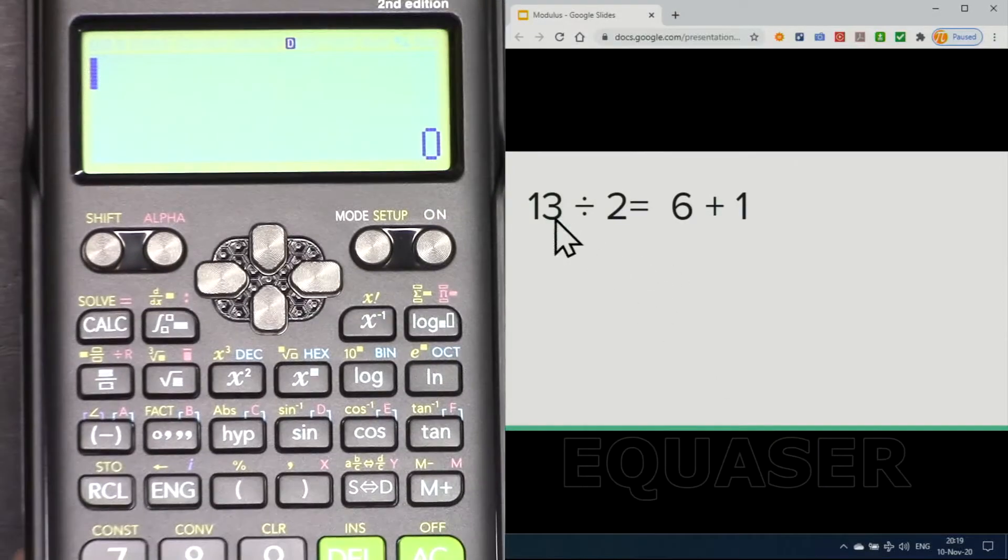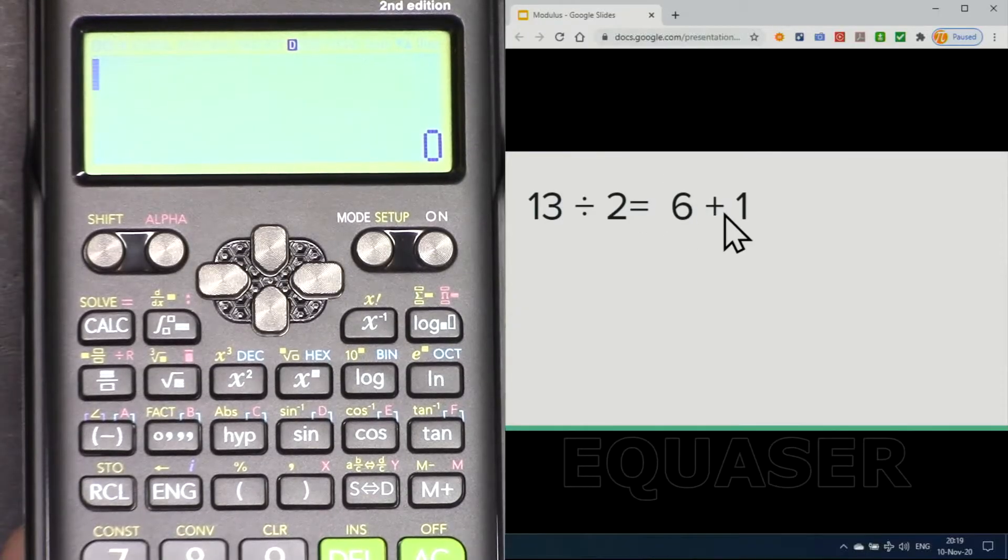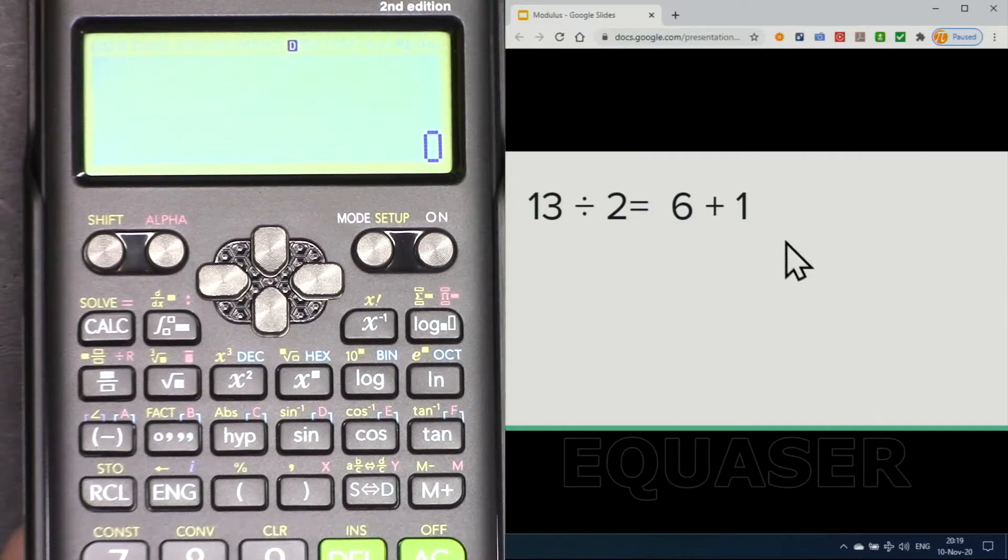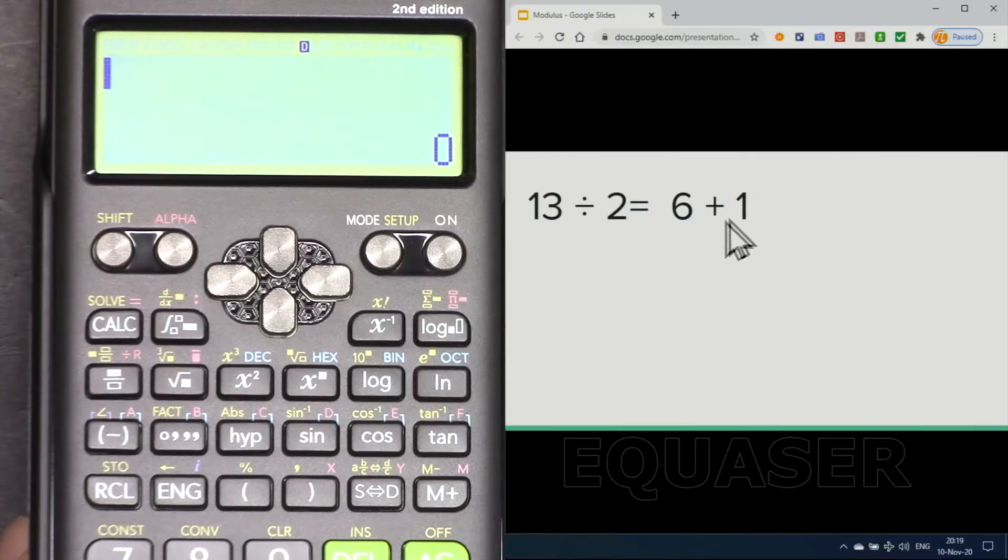If we have 13 divided by 2, the answer in whole number will be 6 plus remainder of 1, because 6 times 2 is 12 and plus 1 would be 13. Now in many calculations in many classes you will need to find this remainder of 1, and this calculator can do it very easily.